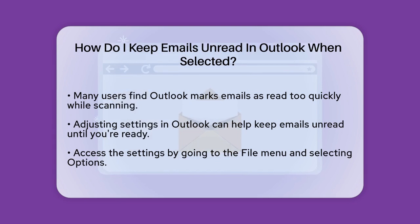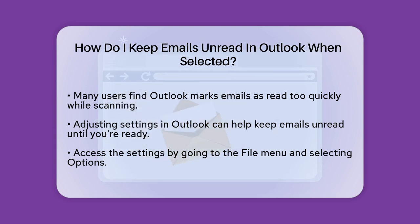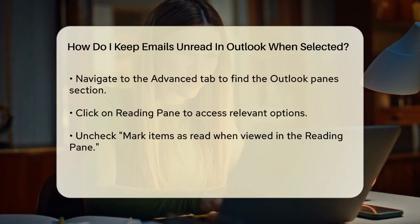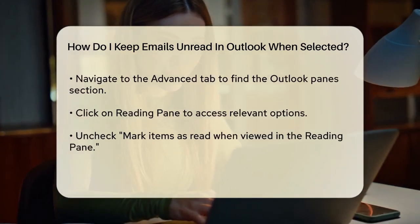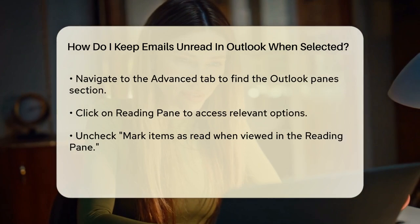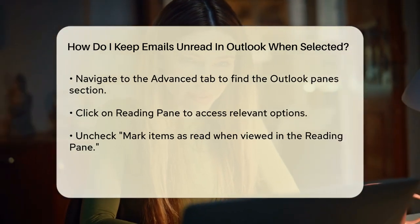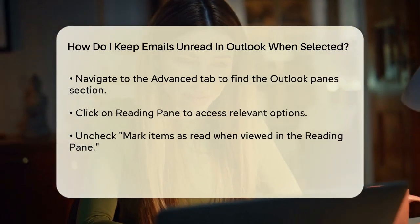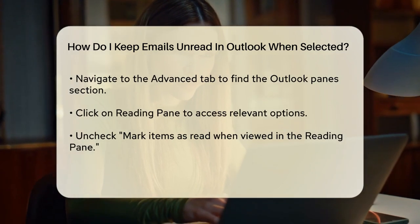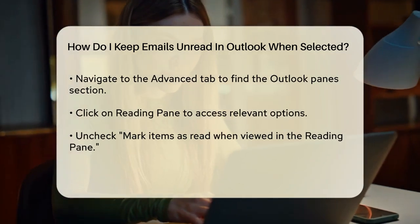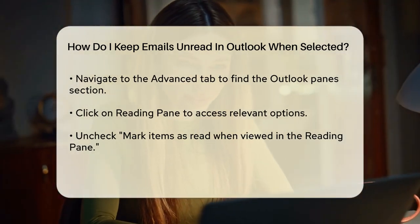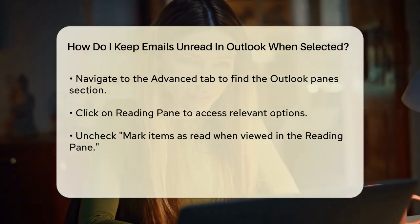In the Reading Pane options, you'll find two important checkboxes: Mark items as read when viewed in the Reading Pane, and Mark item as read when the selection changes. To keep emails unread, you need to uncheck both of these boxes. This way, emails won't be marked as read just because you selected them or viewed them in the Reading Pane.